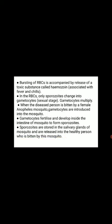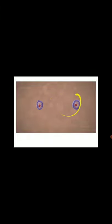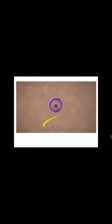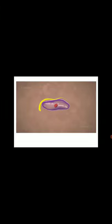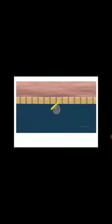Inside the mosquito, we observe the male and female gametocytes. The male gametocyte releases a sperm which fertilizes the egg to form a diploid zygote — the fusion of the haploid gametocytes to form the diploid zygote. This is converted into an ookinete, which then moves into the wall of the gut and forms a cyst-like structure known as an oocyst.